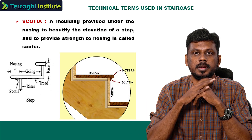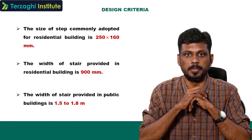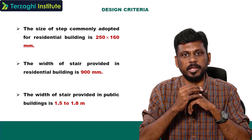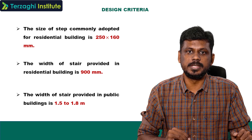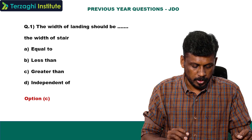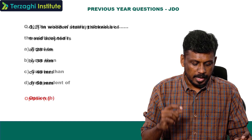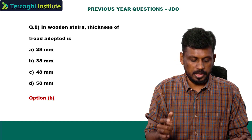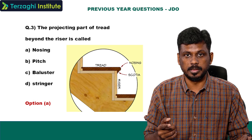This is the name of Scotia. The size of the step is 250 by 160mm. The width of the stairs is 900mm. For public buildings the width of the stairs is 1.8 meters. The thickness of the thread is 38mm. The projection of the thread beyond the riser is called nosing.